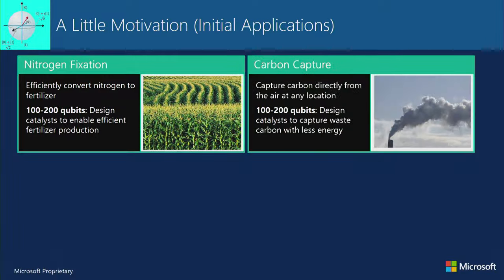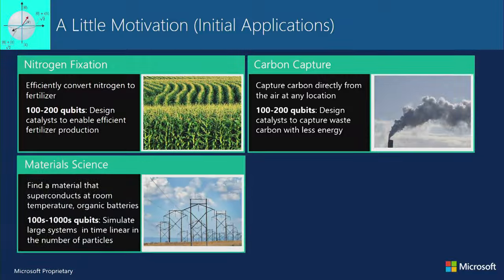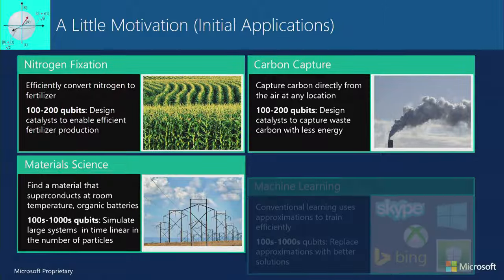For carbon capture, we're going to double the price of energy over the next 20 years just trying to scrub carbon from point sources. If instead we could pull it out of the atmosphere, we could eliminate that increase — about 100 to 200 qubits are our best estimates to solve that. Room-temperature superconductors were also mentioned in the earlier session. We lose a lot of energy in transmission lines and motors, and this is an area where we can do a lot of good if we can actually model the materials.